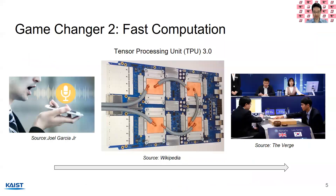Game changer number two is fast computation. A few years ago, there was a discussion within Google about the large computation cost of speech recognition in handheld devices. The problem was that computation had to be done within devices and in data centers, and supporting all cell phone users would require doubling or tripling data centers — which is infeasible. So what they came up with is Tensor Processing Units, or TPUs.